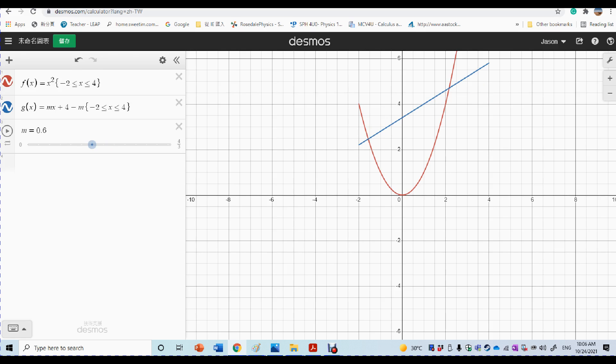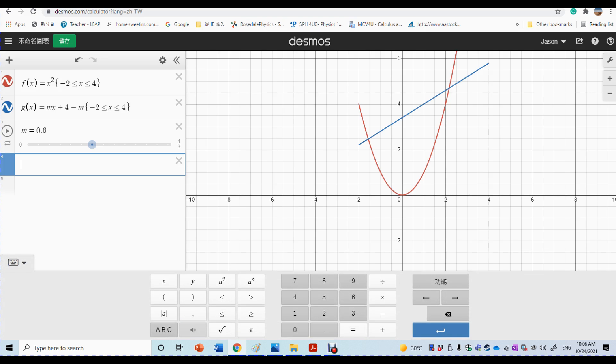So right now you see when we change the value for M, the straight line is changing. The next thing is to get the intersection point. How can we find the intersection point between Fx and Gx? So you see that there should be two intersection points.